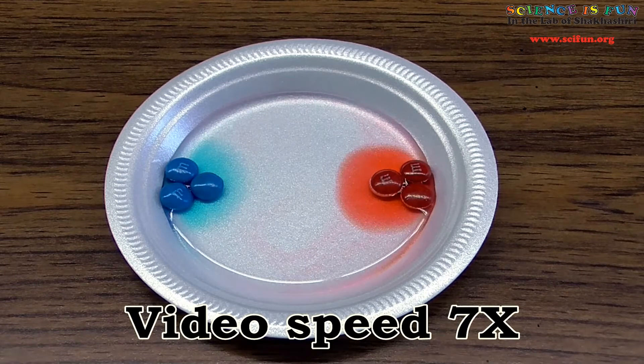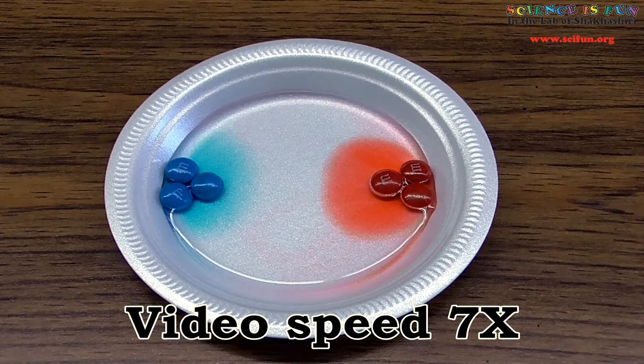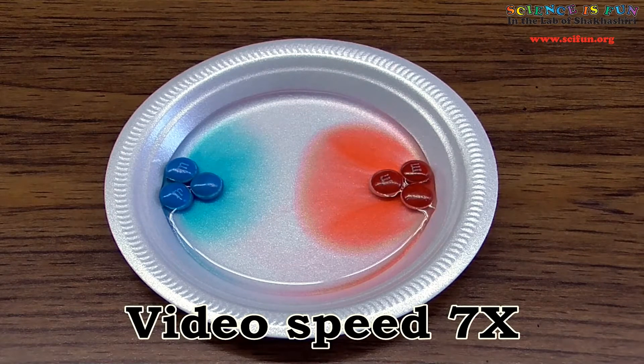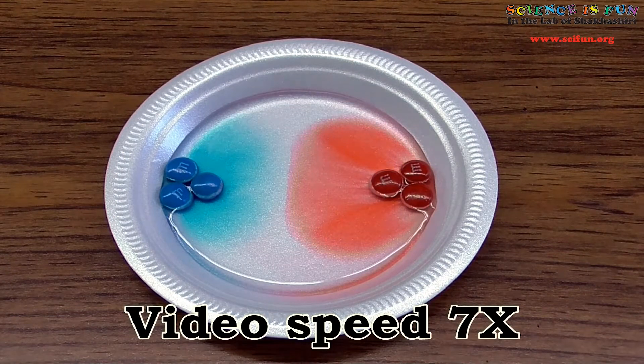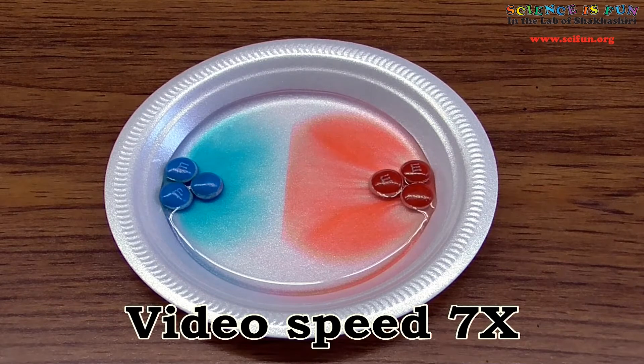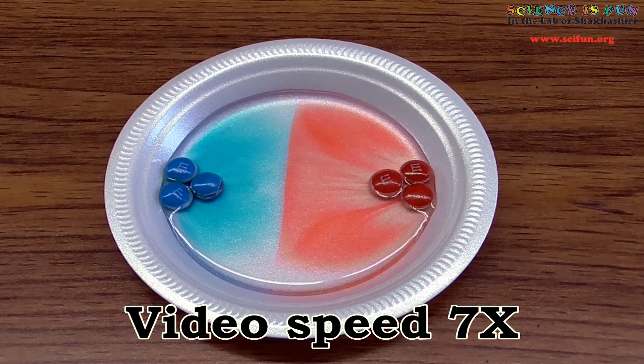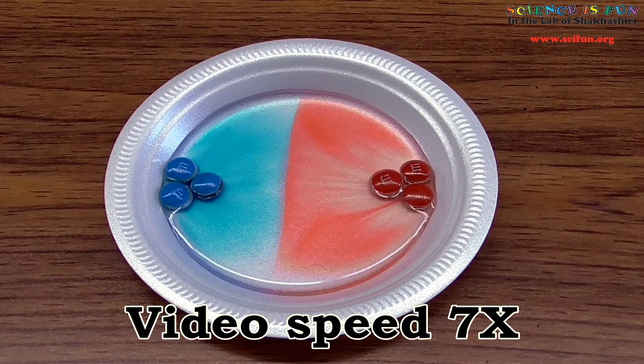Once again, the material spreads through the water, but this time it appears that each color remains in its own area. There is also that sharp line of division that separates the two colors. I wonder if it's the sugar from the candy that contributes to the formation of the sharp line. I think we can actually test this in the following way.